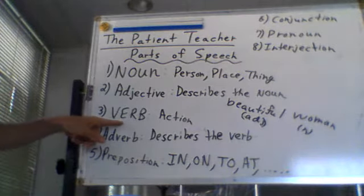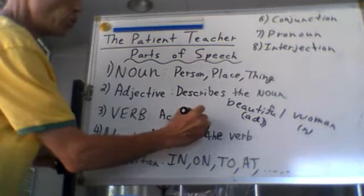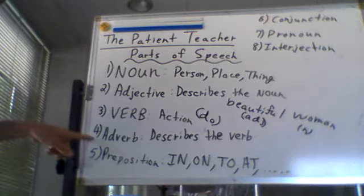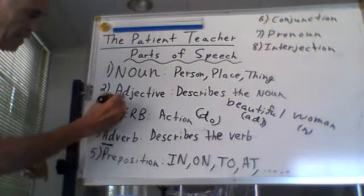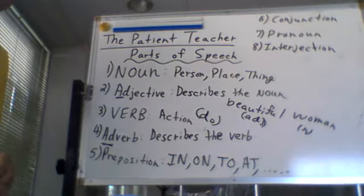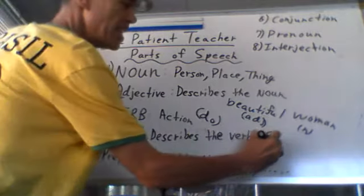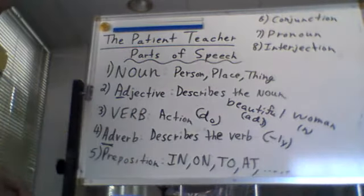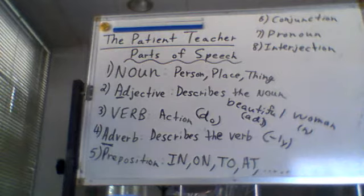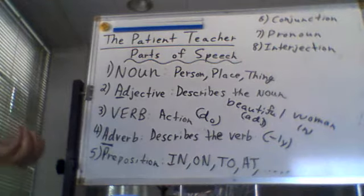Number three is a verb. A verb is simply an action, something we're doing. We often use the word 'do' — it makes it easier to remember. The verb is just whatever you're doing. And the adverb — notice 'ad' — describes the verb. You'll often see the adverb with the ending '-ly': slowly, gently, carefully. These are adverbs describing the verb — it's how you do the action.